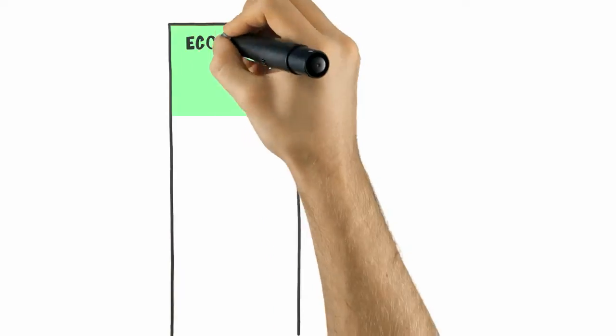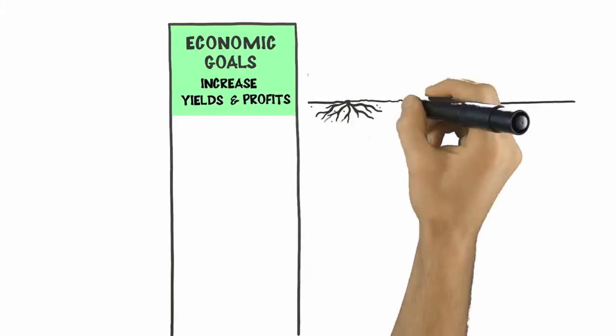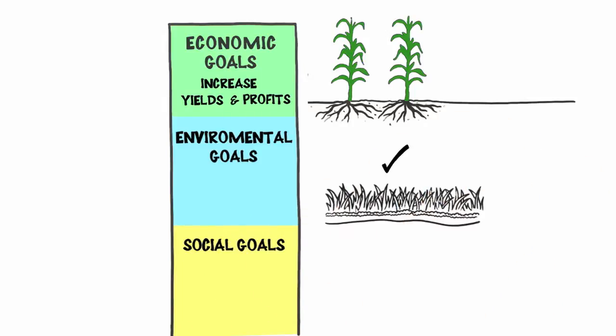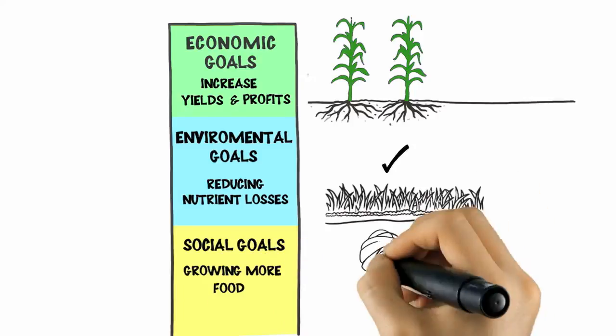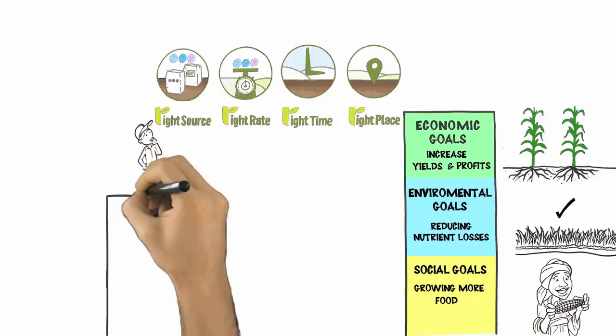They start by setting their economic sustainability goals to increase yields and profits that in turn support rural development. Alongside this, they identify their environmental and social goals, such as improving soil quality, reducing nutrient losses to air and water, and growing more food for communities. They meet these goals by implementing site-specific best management practices, BMPs.